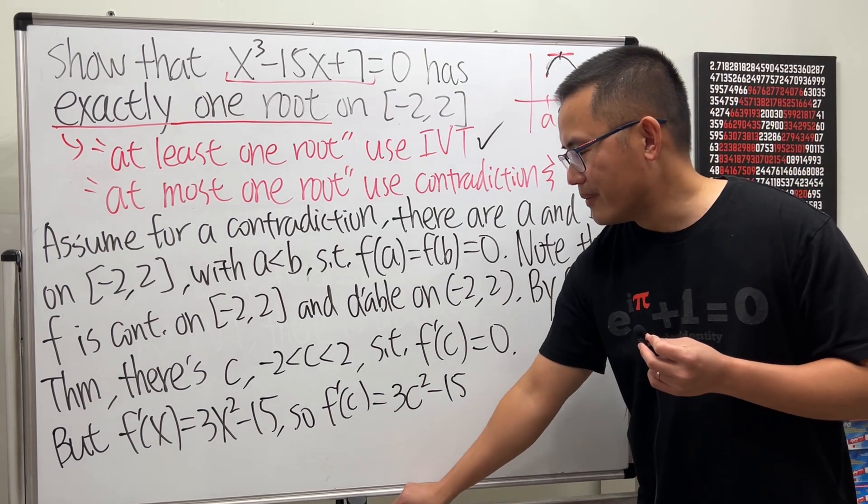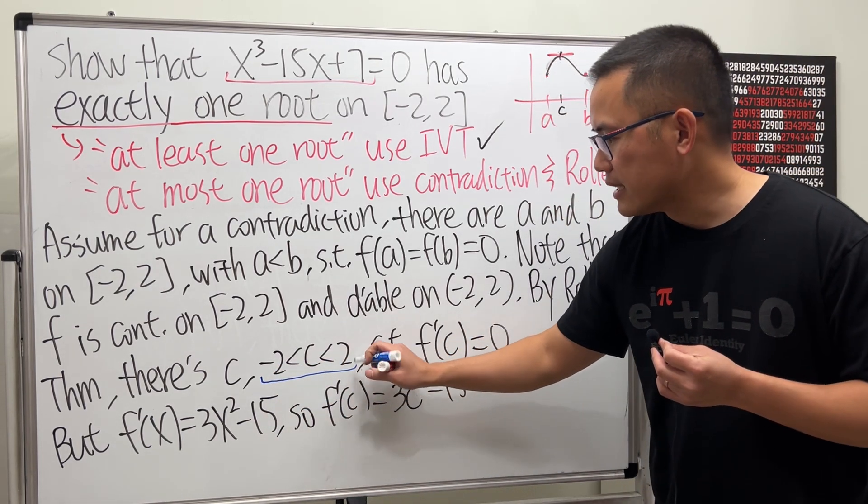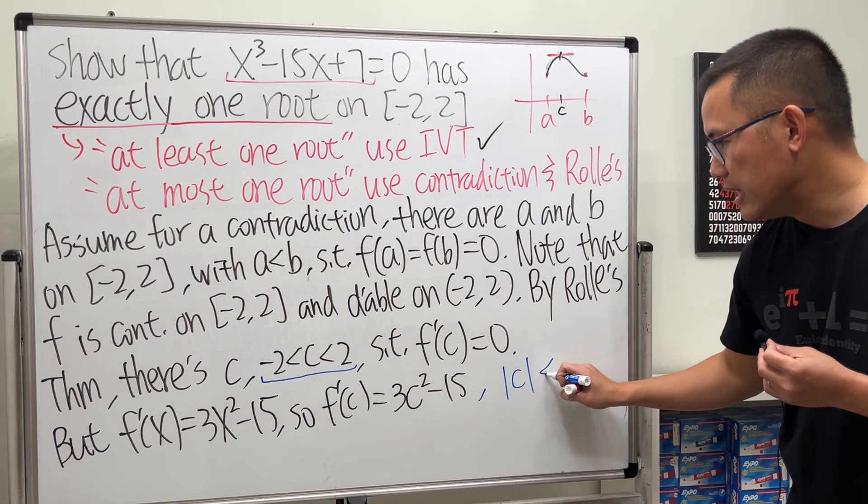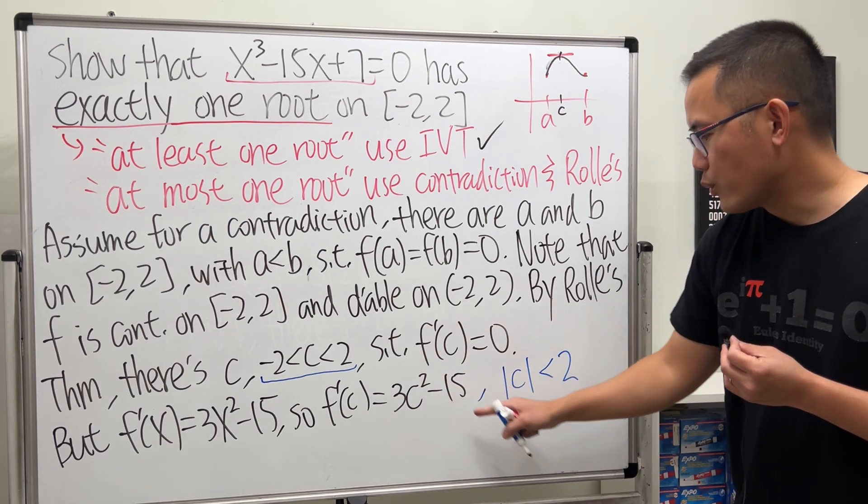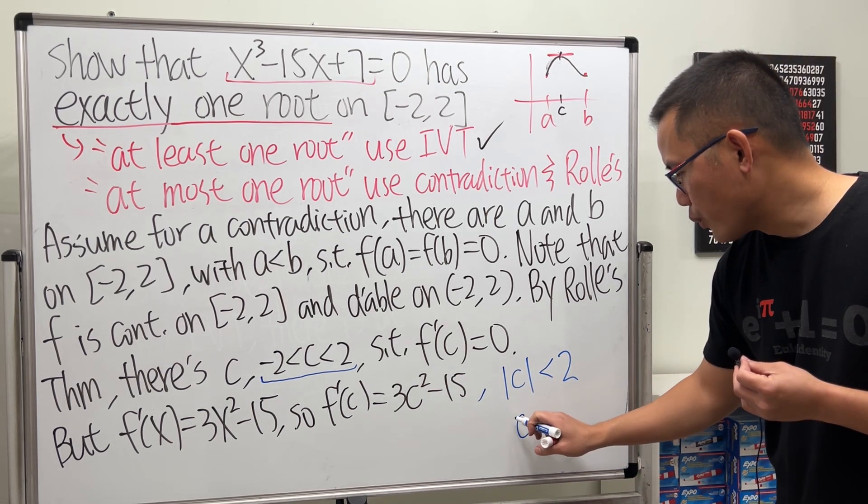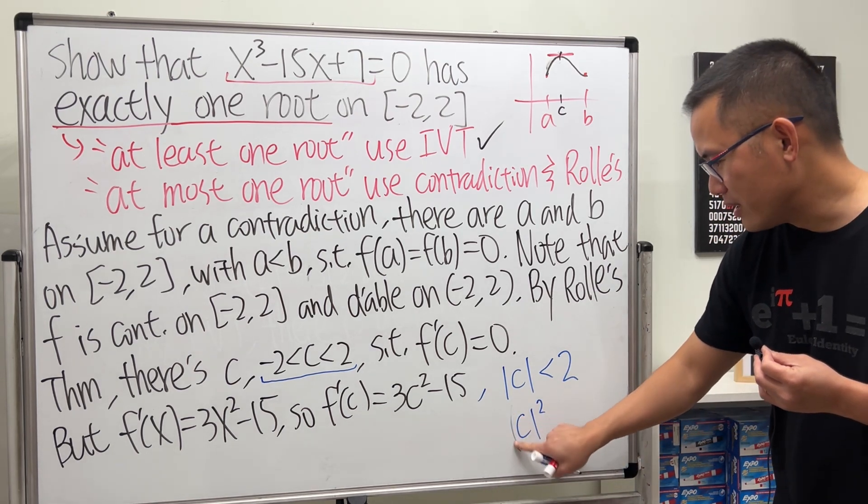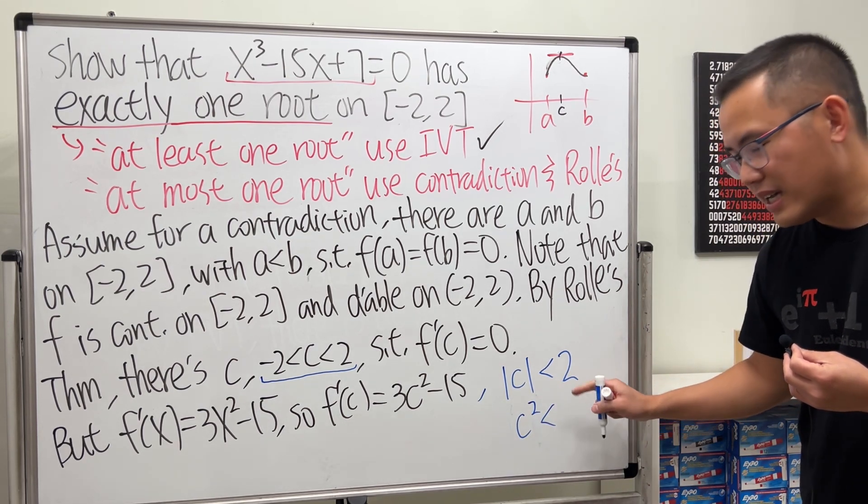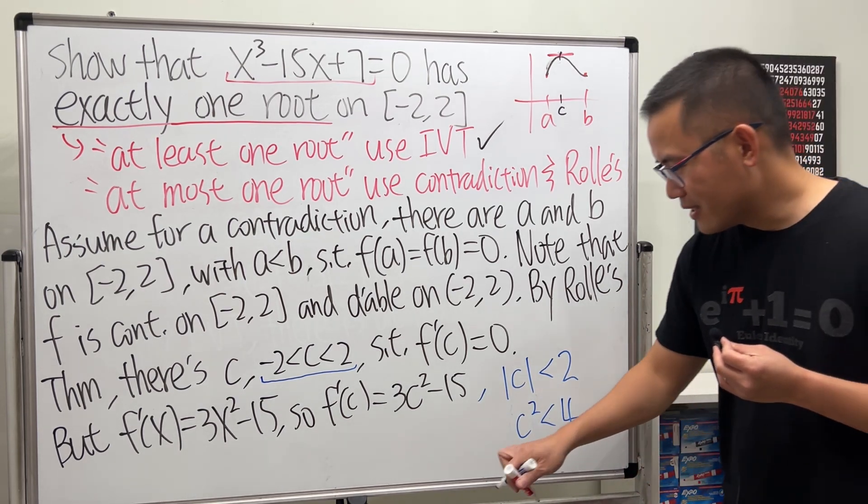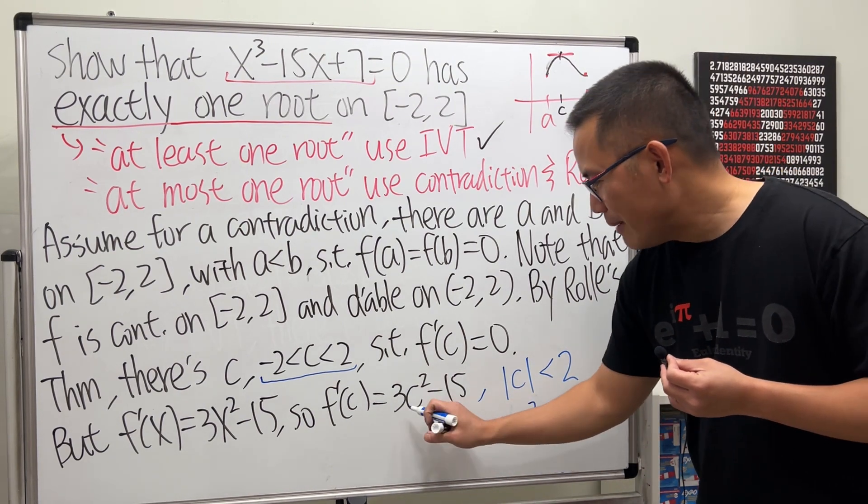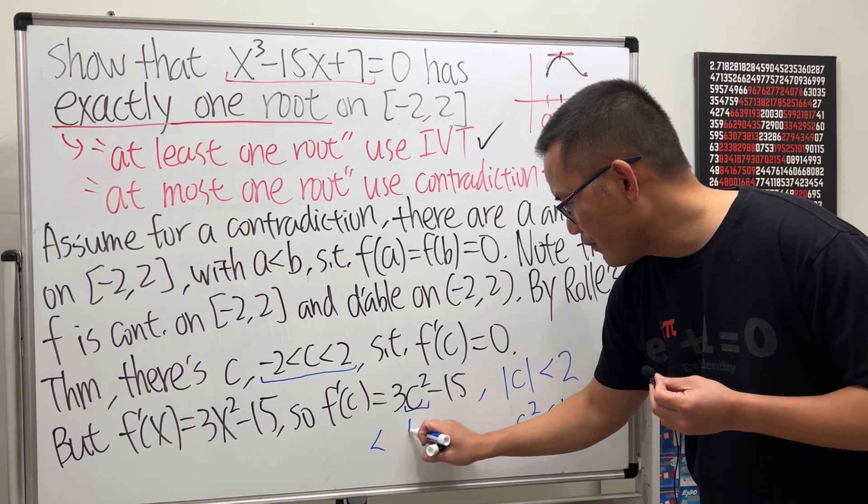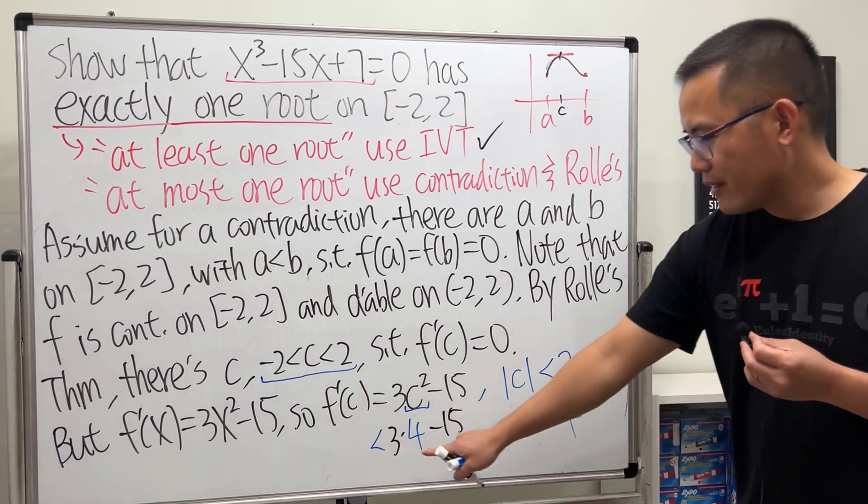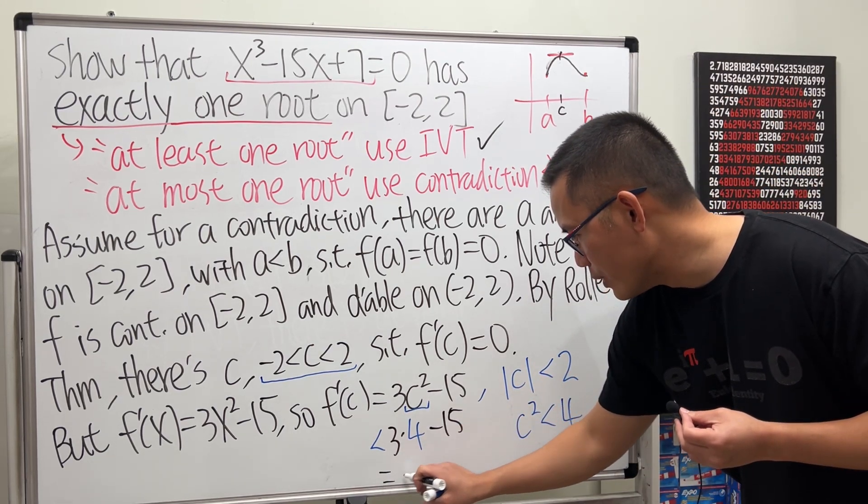However, there's an issue right here, because from here we see that c is in between negative 2 and 2. So we can say the absolute value of c is less than 2. Now to get c squared, we can just square both sides, so c squared—don't really need absolute value anymore because it's always going to be positive anyways—c squared we're just going to get less than 4. Have a look: we have this right here. I'm going to replace c squared with less than 4, and then we have 3 times 4 minus 15. That's just 12 minus 15, which will end up with negative 3.